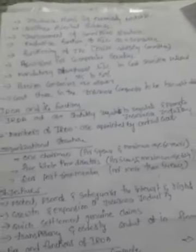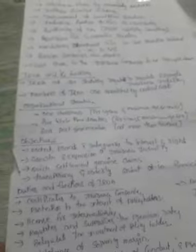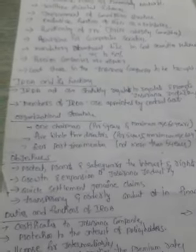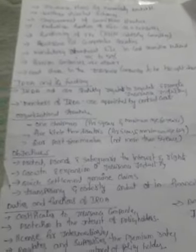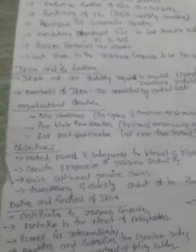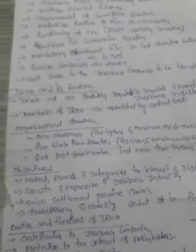The headquarters of the IRDA is located in Hyderabad. Regarding the organizational structure of the IRDA: one chairman will be there, and the chairman holds that position for five years with a maximum age of 60 years. There are five full-time directors, whose term is five years with a maximum age of 62 years. There are also four part-time members whose term should not be more than five years.